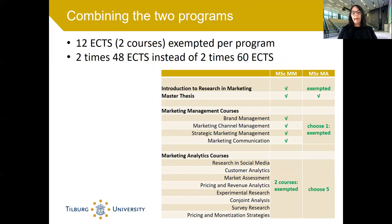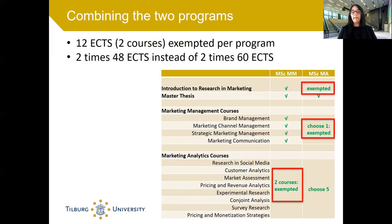If you want, you can combine the two programs. If you choose your electives wisely, we can exempt two courses per program, so you follow two programs of 48 ECTS instead of 60 ECTS each. For example, in the Master in Marketing Management we can exempt two marketing analytics courses from the Master Marketing Analytics, and they can count as cluster B electives in the Master Marketing Management. In the Master Marketing Analytics we can exempt the Introduction to Research in Marketing course from the Master Marketing Management, and also exempt one Marketing Management course that can count as a cluster D course in the Master Marketing Analytics.